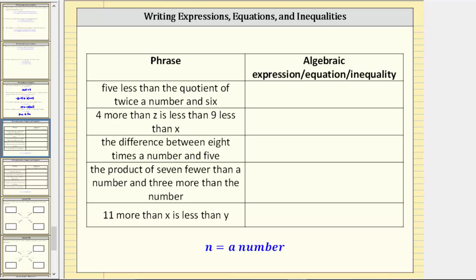In this exercise we are given a phrase and asked to write the corresponding expression, equation, or inequality. The first phrase is five less than the quotient of twice a number and six.